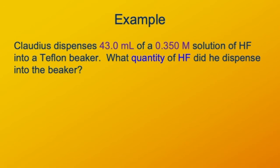Here's an example. Claudius dispenses 43 milliliters of a solution with a concentration of 0.350 molar hydrogen fluoride into a Teflon beaker. The reason for that is hydrogen fluoride dissolves glass — it also dissolves flesh, so it's pretty nasty stuff. What we're asking is how many moles of HF are in this beaker with 43 milliliters of this solution?